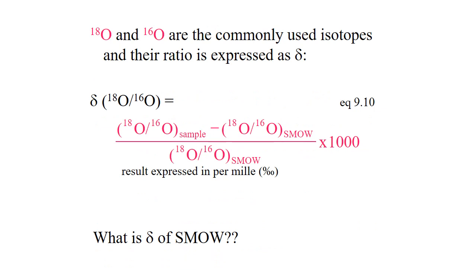Stable isotopes are really useful in assessing the relative contributions of different and various reservoirs, as each will have a unique and distinctive isotopic signature. Because of the small changes in mass, the isotope-to-isotope ratios are going to be very small and difficult to use directly. Therefore, instead we're going to use what's referred to as the delta notation, which relates the ratio of the sample to a standard and is expressed in the per mil notation.